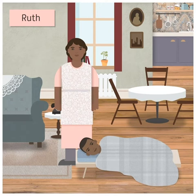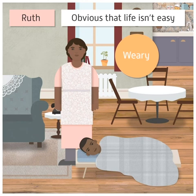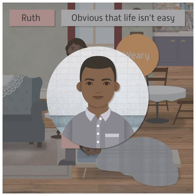It's obvious that life is not easy for Ruth, and she appears very weary. The family share an outside bathroom with other families in the building, so Travis has to get to the bathroom and wash quickly in order to avoid holding anybody else up.